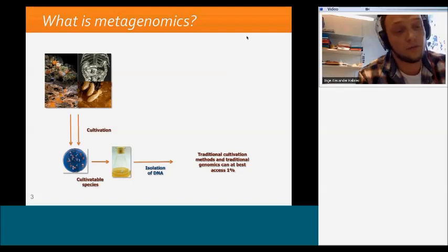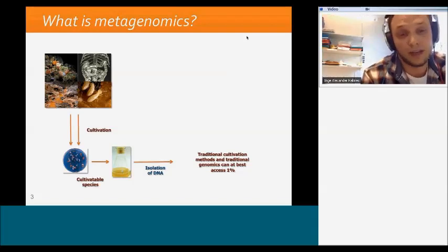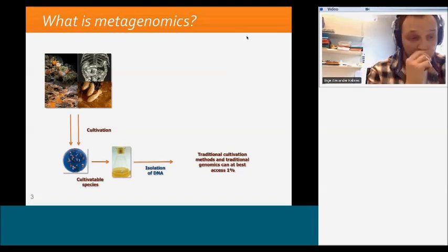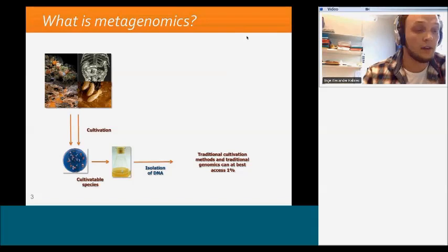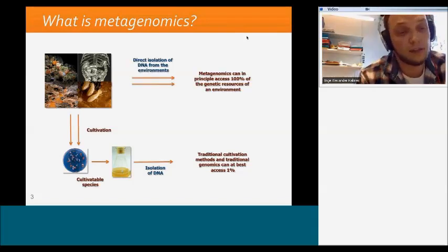With traditional cultivation, this procedure involves growing the sample in a medium of choice and then trying to isolate the DNA from the species that actually grow afterwards. However, with this method we can only access about one percent of the total DNA from the sample because the medium doesn't reflect the complex source of nutrition and other factors necessary for growth in nature. With metagenomics we can isolate the DNA directly from the environment, which means that in principle we can access a hundred percent of the total DNA in the sample.